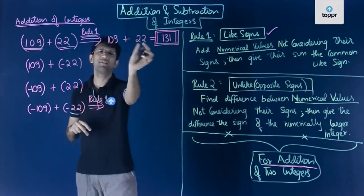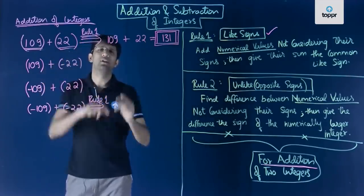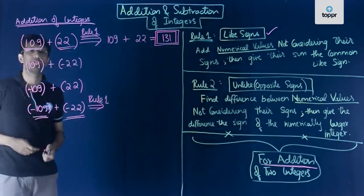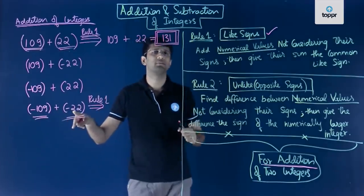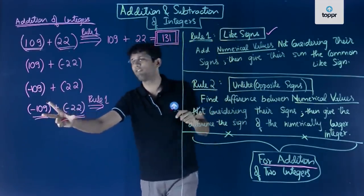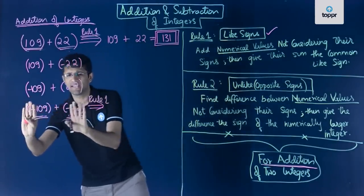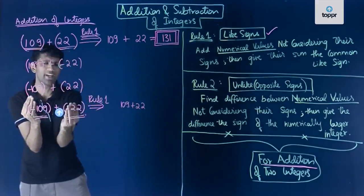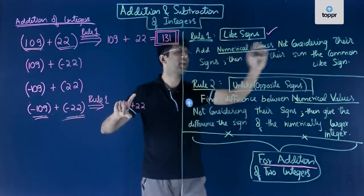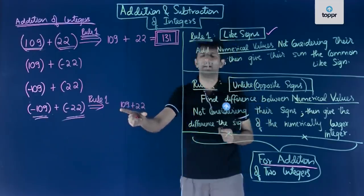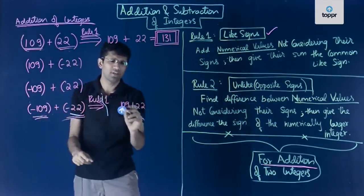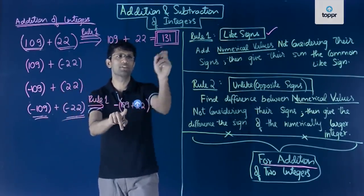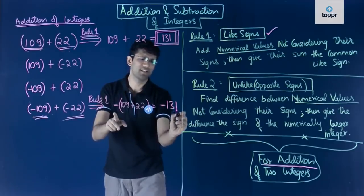This was straightforward since both numbers were positive — it is essentially addition of two whole numbers. In the final case, we have −109 added to −22. Because both integers are negative, we follow rule one again: add the numerical values 109 + 22 = 131, then give the sum the common like sign, which is minus. So the answer is −131.